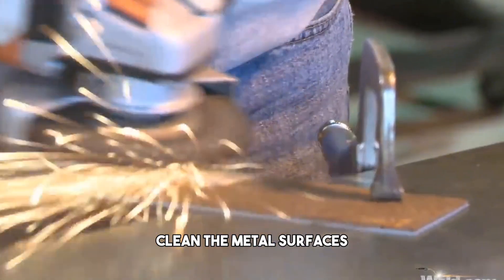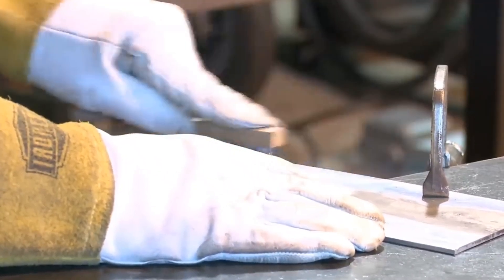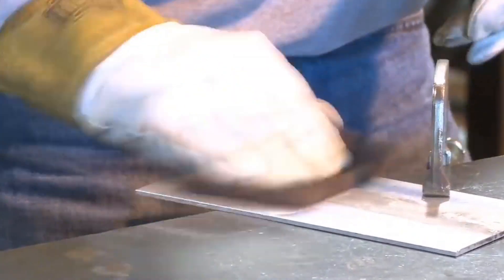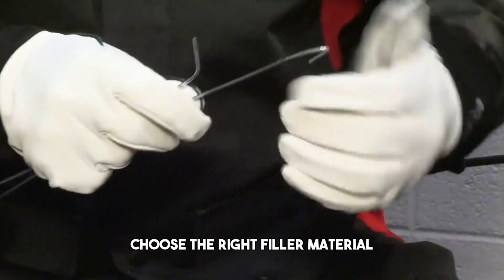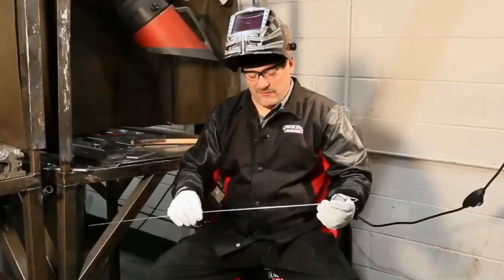First, clean the metal surfaces by removing any dirt, oil, rust, or paint that could interfere with the welding process. Next, choose the right filler material by matching the type and grade of the filler material to the base metals you are welding.